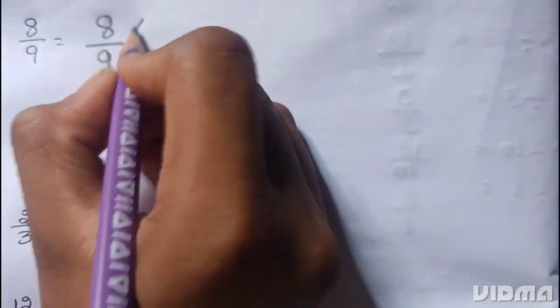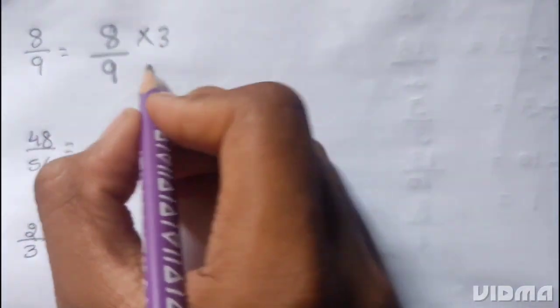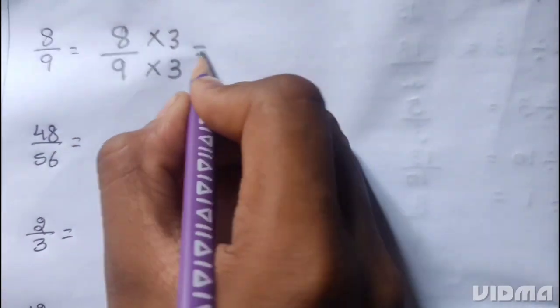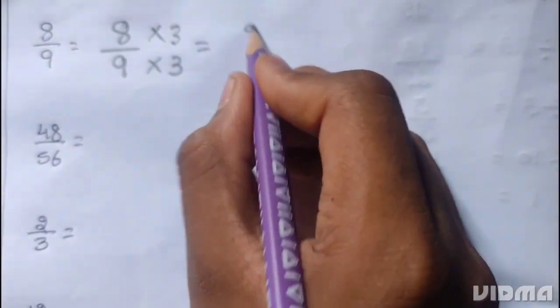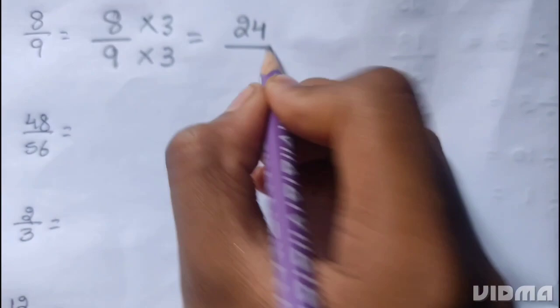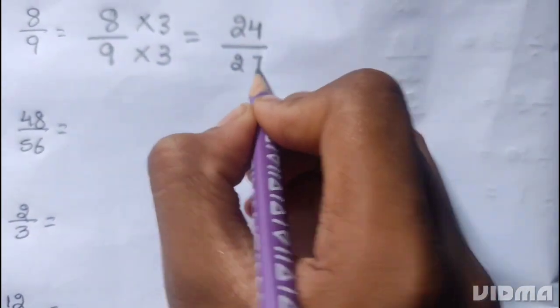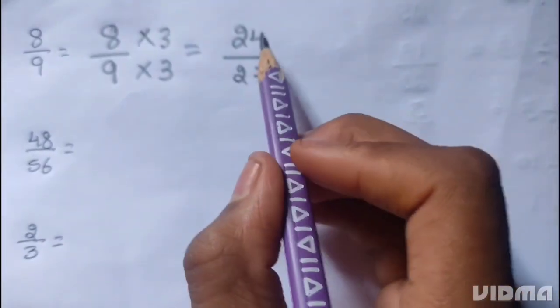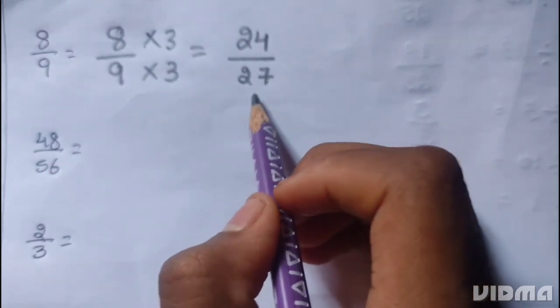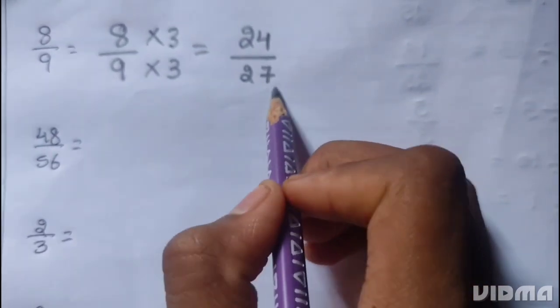8 by 9. 8 multiply 3, 9 multiply 3. 8 3s are 24, 9 3s are 27. 24 is the numerator, 27 is the denominator.